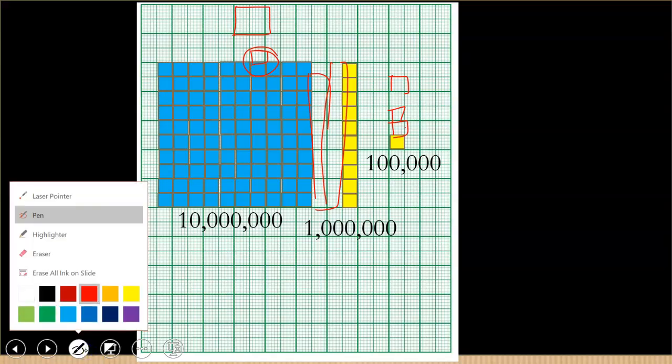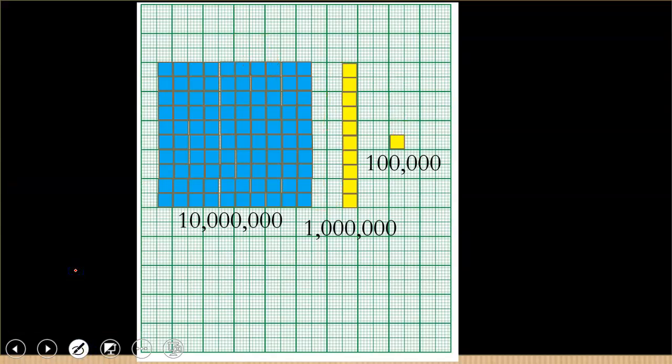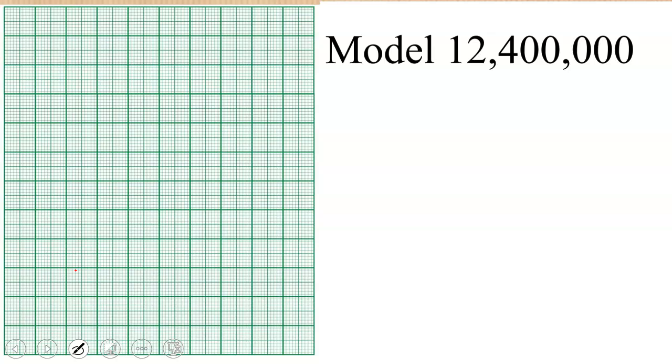And so we are going to now depend on this to model other numbers or other huge numbers. For example, we want to model 12 million 400,000. That is a huge number, right? So first of all we need to break this down. 12 million simply means we have 10 million.